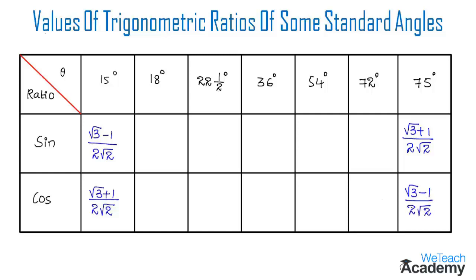Now let us write the value for 18 degrees. Sine 18° = (√5 − 1) / 4, whereas the value for cos 18° = √(10 + 2√5) / 4.